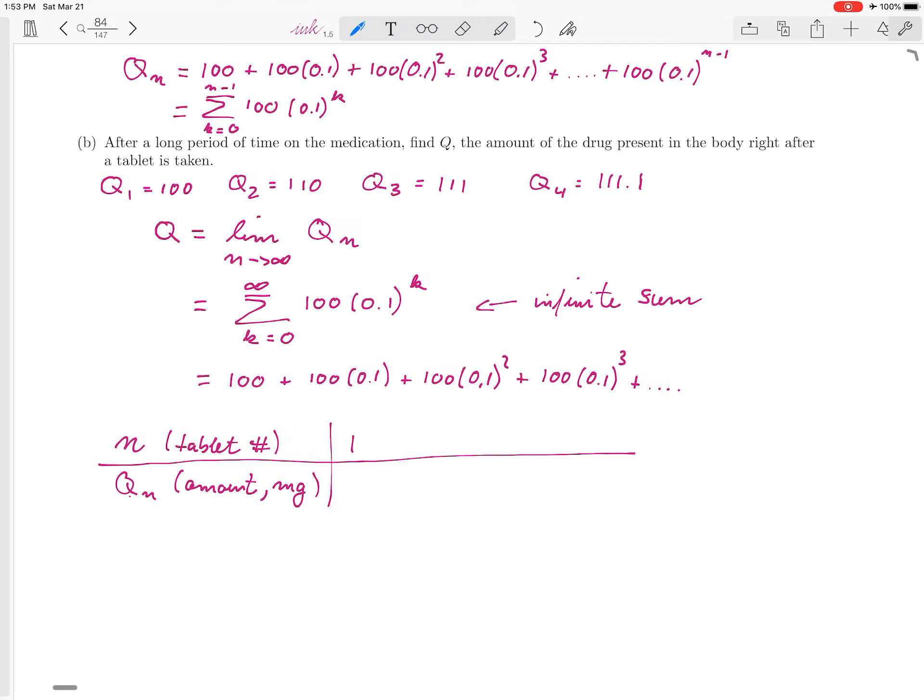So let's see. After one dose has been taken, it was 100. After two doses, it was 110. After three doses, it was 111. After four, we already computed that, it's 111.1. After five, if we added one more term to our sum, so 100 times 0.01 to the fourth, you can double-check this, we get 111.11.